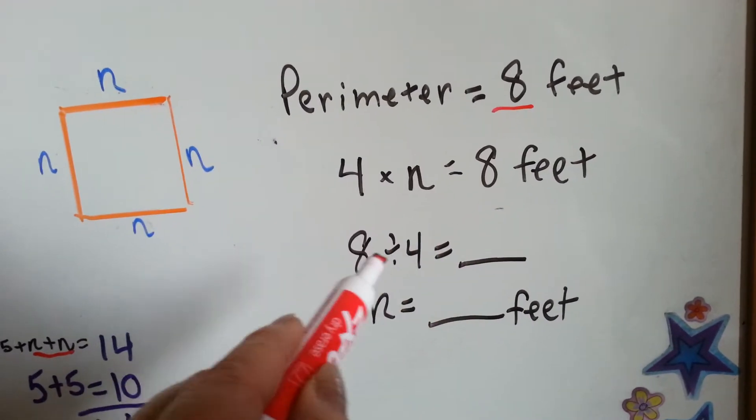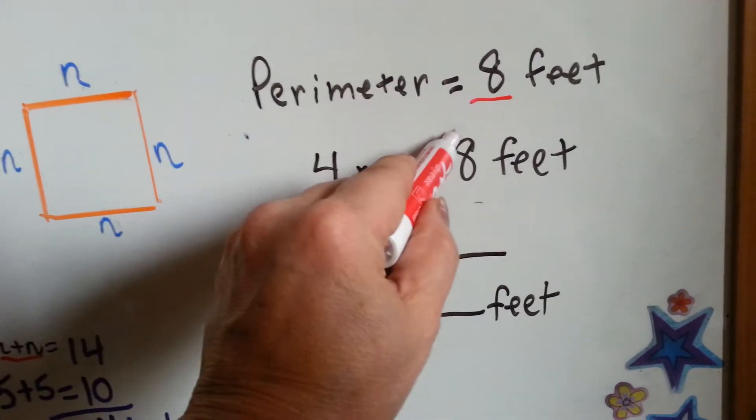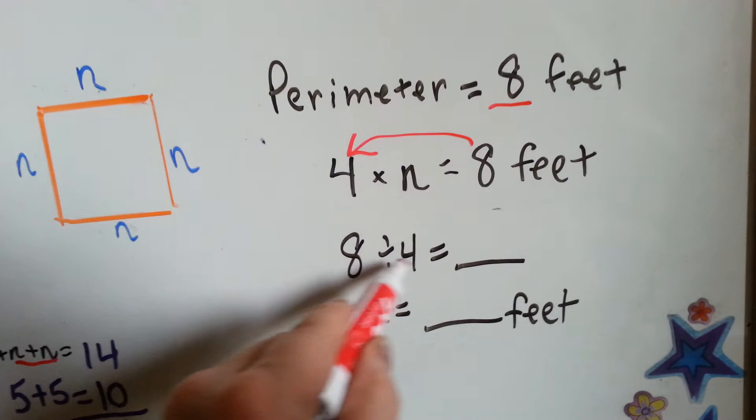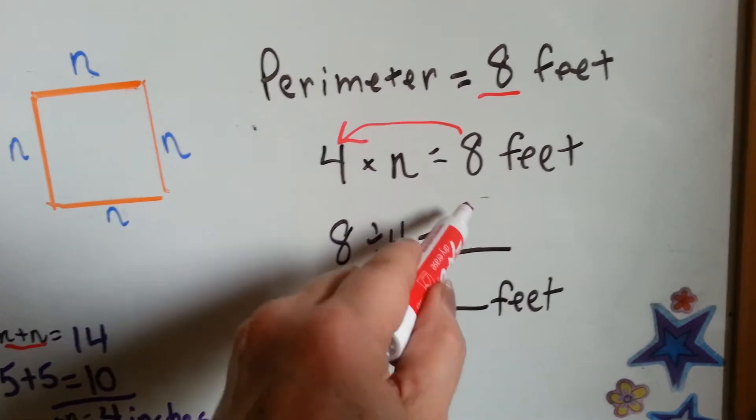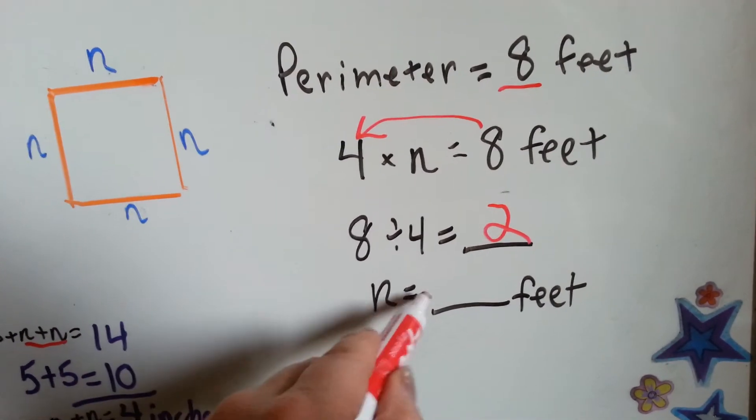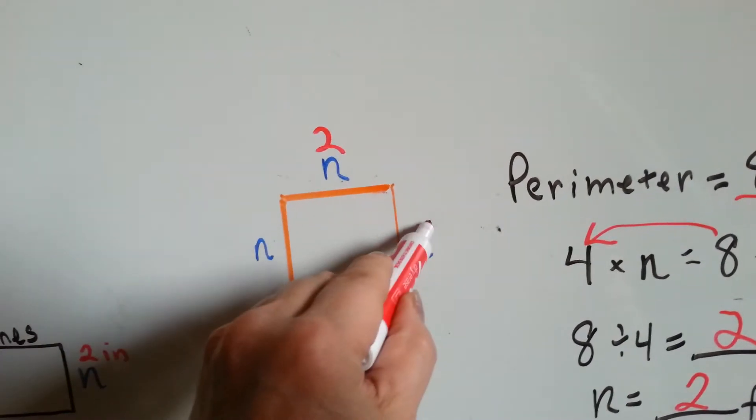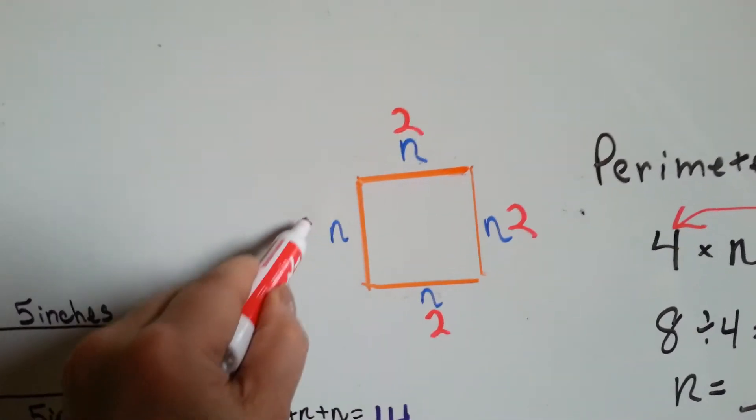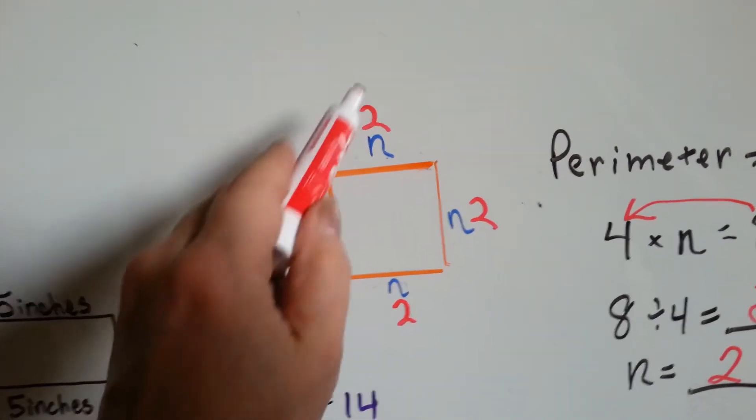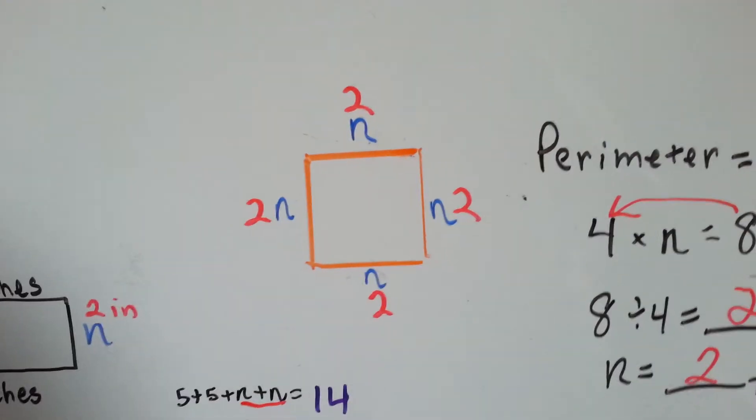Well, we can also do 8 divided by 4. 8 divided by this 4. 8 divided by 4 is 2. That means n must equal 2 feet. So each one of these equals 2. Does that work? Does that equal 8? 2, 4, 6, 8. That works perfectly.